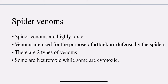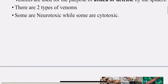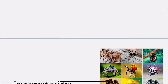When you look at the spider's venom, there are two types: the first one is neurotoxic venom and the second is cytotoxic venom. The spider venoms are toxic — they use it for defense or for attacking. Two types: neurotoxic and cytotoxic.